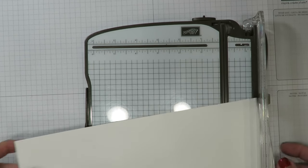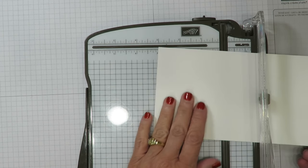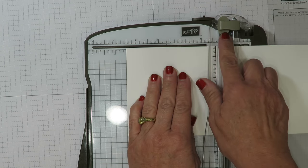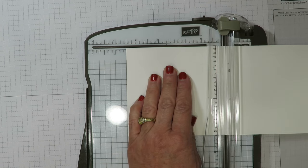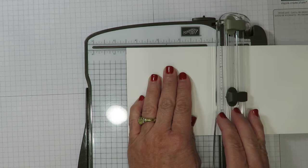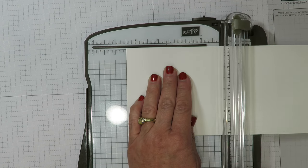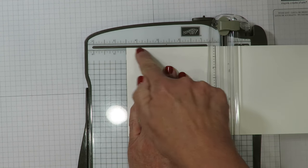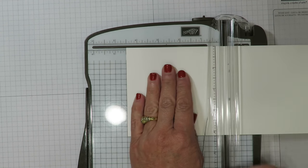We're going to do some scoring and we are going to score at four and a half. So I'm going to line up my paper here in my Stampin' Trimmer. There is a light blade that comes with the trimmer for scoring. There is also a dark blade that comes with it for cutting and you can navigate them out of the way which is really a wonderful thing.